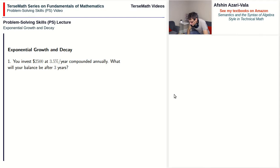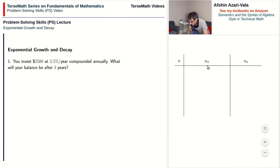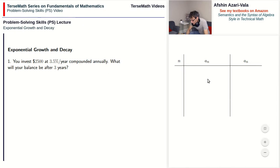For this problem, let's say n is the number of terms — in this case the number of years that go by. aₙ is the money that you will have at the end of that term. So if n is one, one year has gone by and a₁ is the amount of money at the end of year one. With n being zero, that means we haven't started the investment yet — we just put the money into the account. We have two thousand five hundred dollars. That's the initial amount, your a₀.